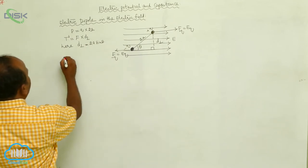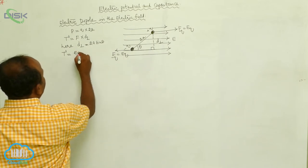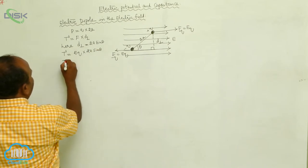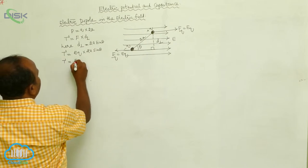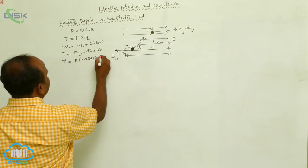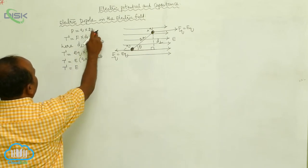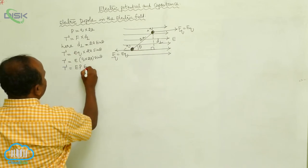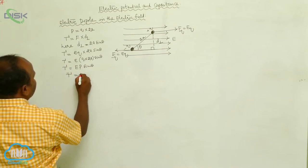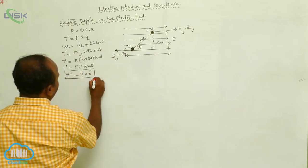The torque equals force EQ into perpendicular distance 2A sine theta. Therefore, torque equals E into Q into 2A into sine theta. Since Q into 2A equals P (the dipole moment), torque equals P sine theta. In vector form, this can be written as tau bar equals P bar cross E bar.